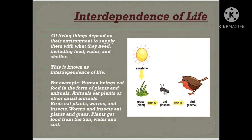Interdependence of life. All living things depend on their environment to supply them with what they need, including food, water, and shelter. This is known as interdependence of life. For example, human beings eat food in the form of plants and animals. Animals eat plants or other small animals. Birds eat plants, worms, and insects. Worms and insects eat plants and grass. Plants get food from the sun, water, and soil. Thus we see that all living things depend on other living and non-living things for their survival.